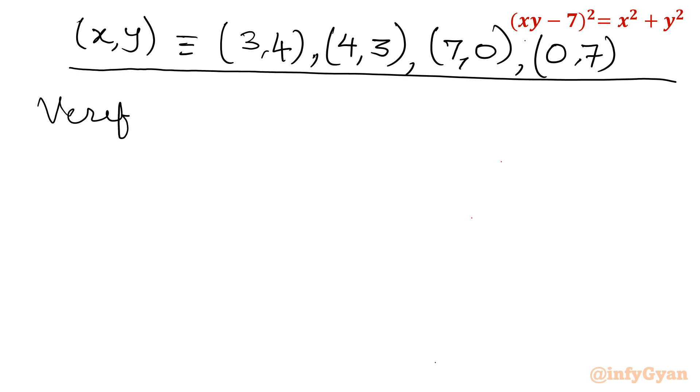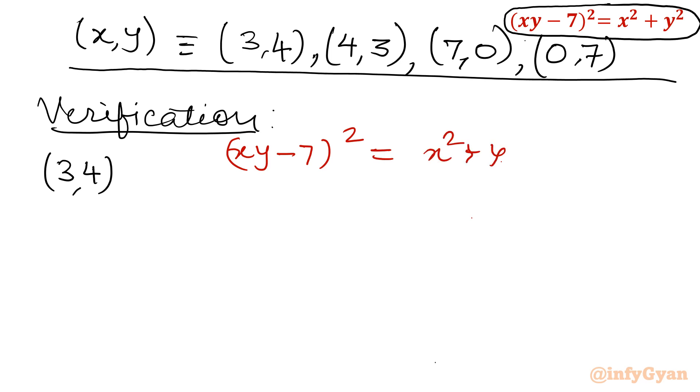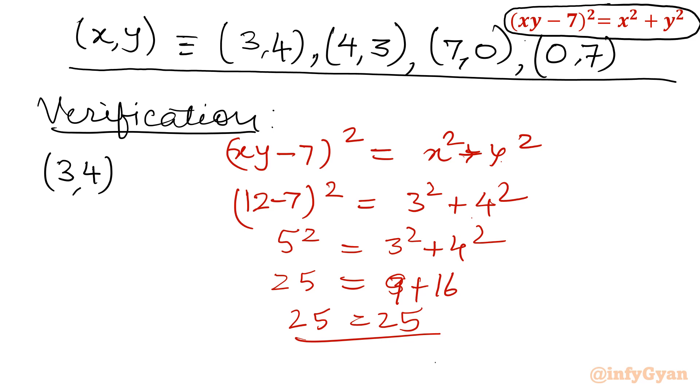Now let's verify. Let me consider the first case 3 comma 4. The given equation is xy minus 7 whole square equal to x square plus y square. Let's put 3 times 4: 12 minus 7 whole square equal to 3 square plus 4 square. Is this true? 5 square is equal to 3 square plus 4 square. Yes, it is true, because this is a Pythagorean triplet. 9 plus 16, 25 is equal to 25. It is verified.